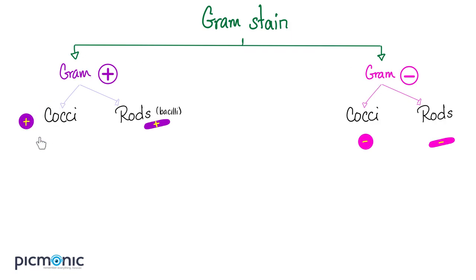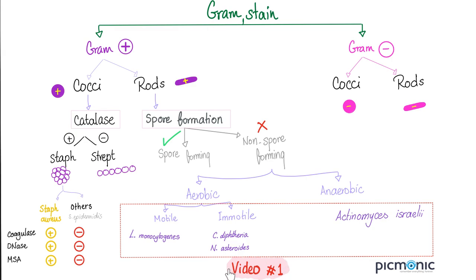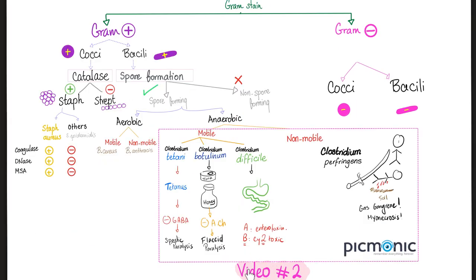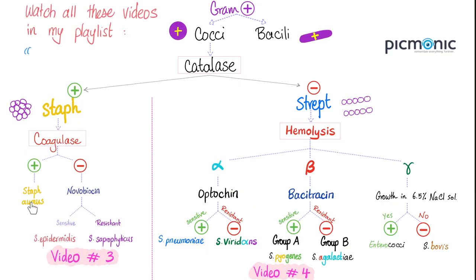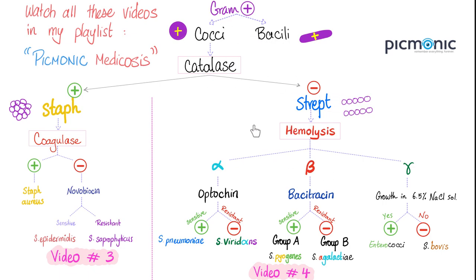In video one we covered spore-forming gram-positive bacilli. Video two covered the clostridia — also gram-positive rods. Video three covered Staph, gram-positive cocci. Video four covered Strep pneumo, Strep viridans, group A strep, group B strep, Enterococci, and Bovis — gram-positive cocci that are catalase negative.